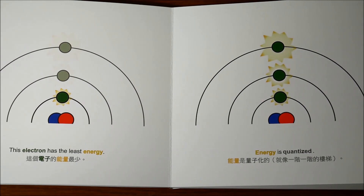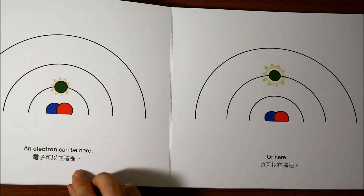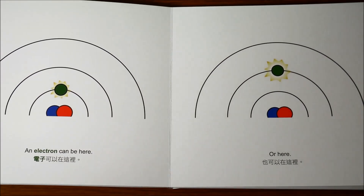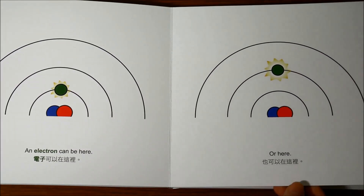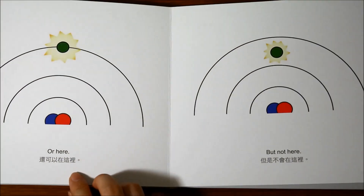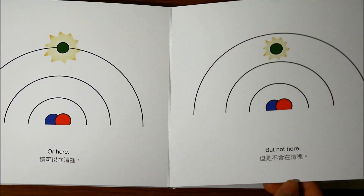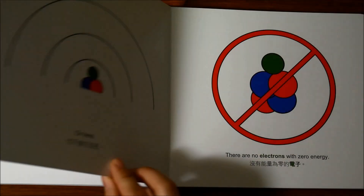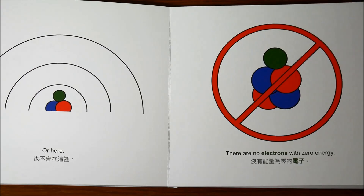Energy is quantized. An electron can be here, or here, or here, but not here, or here. There are no electrons with zero energy.